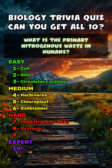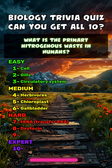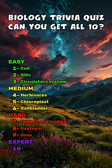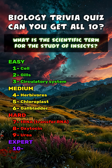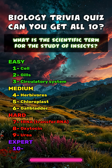What is the primary nitrogenous waste in humans? Urea. What is the scientific term for the study of insects? Entomology.